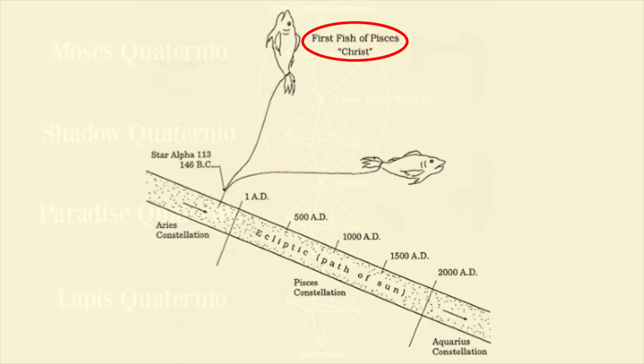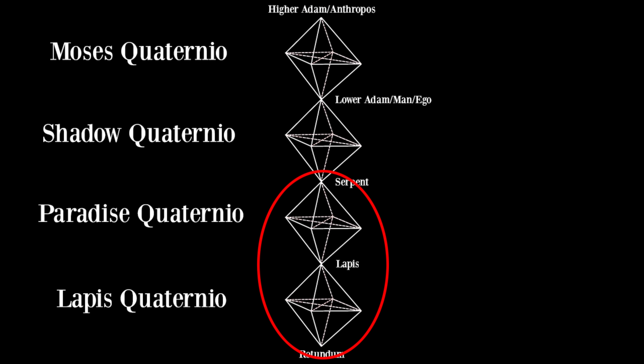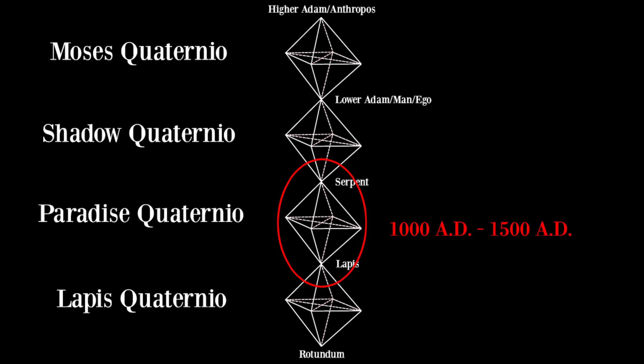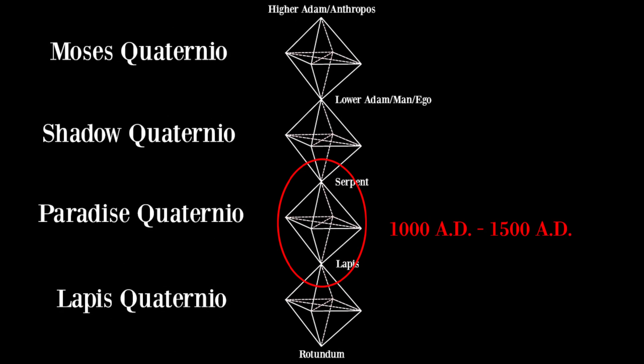As we said in the last video, the first one thousand years of the Christian Ion could be linked to the first two quaternios. If the Moses Quaternio reflected a spiritual period, and the Shadow Quaternio reflected a unity of the carnal man with the spiritual, the lower two quaternios reflect a further descent from the spiritual into the material. In regards to the Paradise Quaternio, this reflects the period between 1000 AD and 1500 AD. Jung associates it historically with the emergence and development of alchemy.